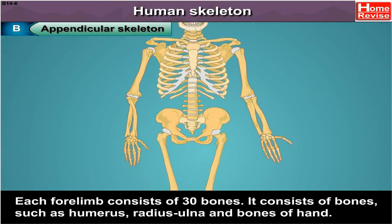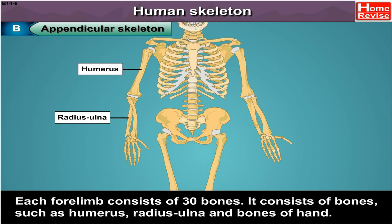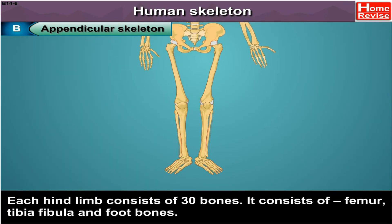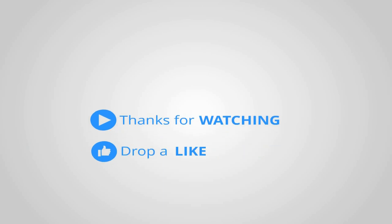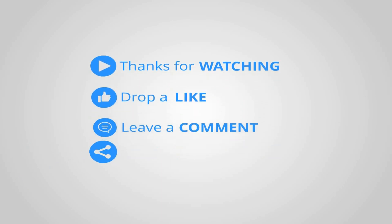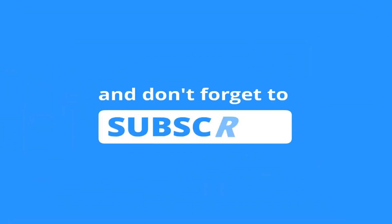Each forelimb consists of 30 bones, including the humerus, radius, ulna, and bones of the hand. Each hind limb also consists of 30 bones, consisting of the femur, tibia, fibula, and foot bones.